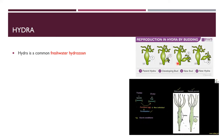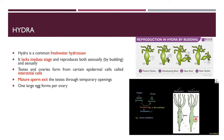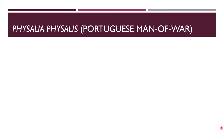Hydra is a freshwater hydrozooan. Asexual reproduction is by budding, and the medusa stage is absent — a very important distinguishing feature. In sexual reproduction, testes and ovaries develop from the epidermis, producing sperm and eggs. After fertilization and early development, the embryo drops from the parent, settles on a substrate, and develops into a new hydra.